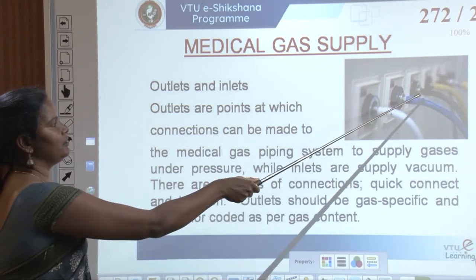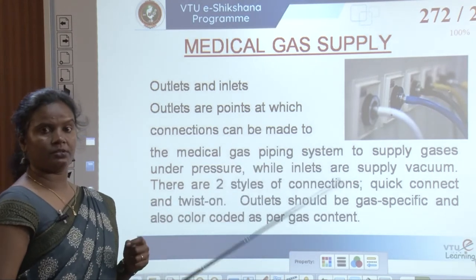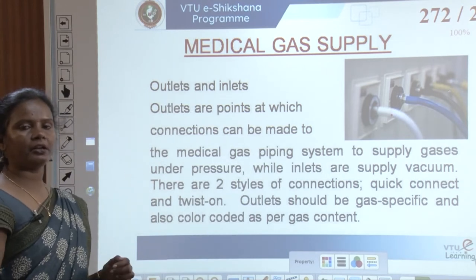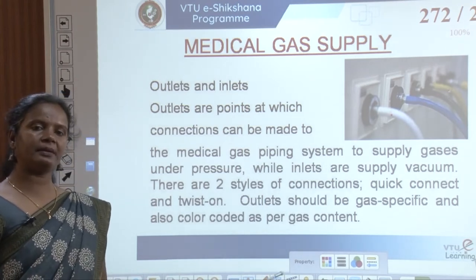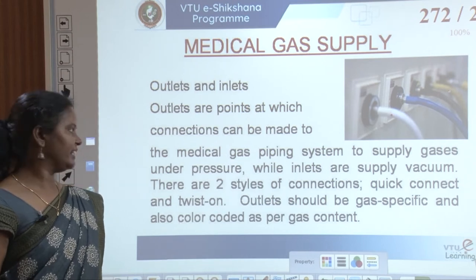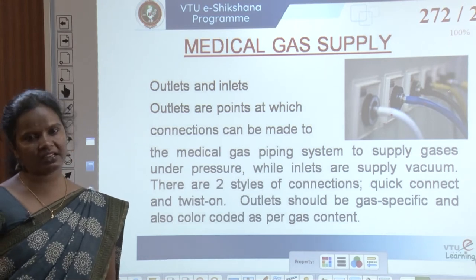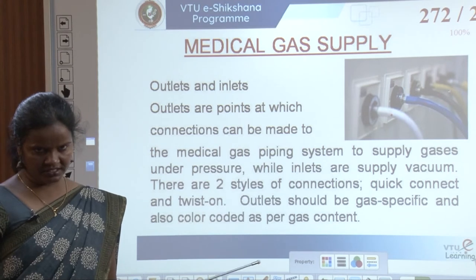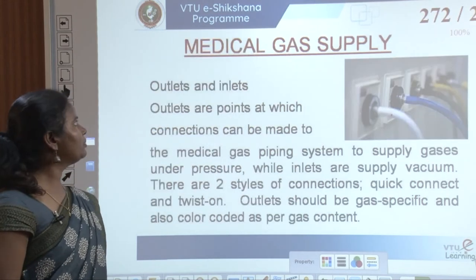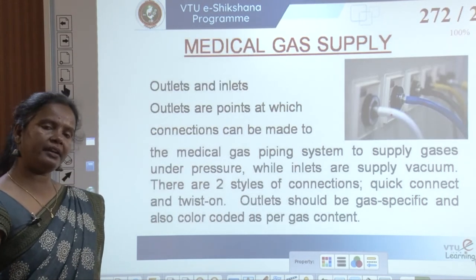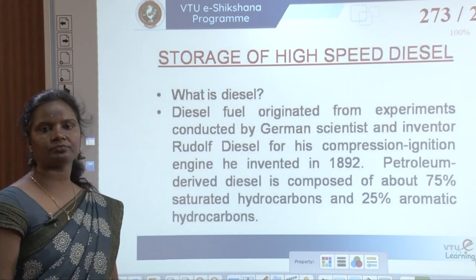Outlets and inlets are very important. Different colored outlets — white, blue, red, yellow — represent different gases and must be properly allocated and fixed. Outlets are points at which connections are made to supply gases under pressure, while inlets supply vacuum. There are two styles of connections: quick connect and twist-on. Outlets must be gas-specific and color-coded.